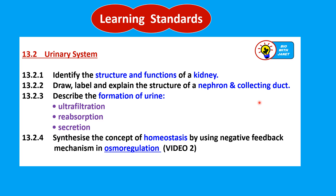The learning standards for this lesson are as follows. 13.2, urinary system. Firstly, we should be able to identify the structure and functions of a kidney. Secondly, be able to draw, label and explain the structure of a nephron and collecting duct. Number 3, describe the formation of urine, which involves the processes of ultrafiltration, reabsorption and secretion. And finally, be able to synthesize the concept of homeostasis by using the negative feedback mechanism in the process of osmoregulation.